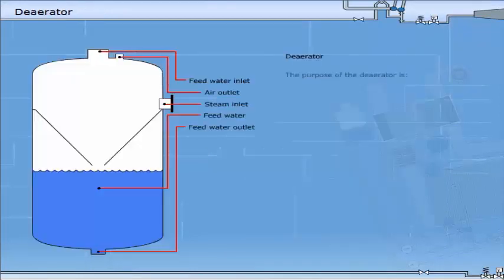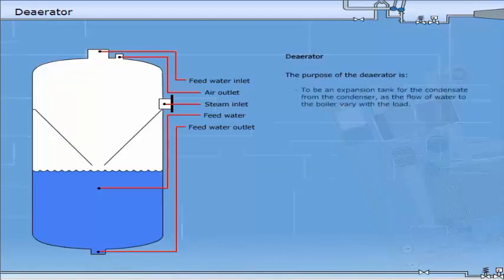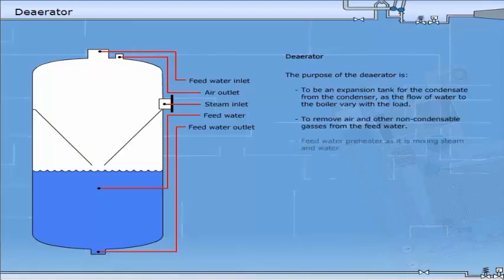The purpose of the de-aerator is to be an expansion tank for the condensate from the condenser as the flow of water to the boiler varies with the load, to remove air and other non-condensable gases from the feed water, to preheat the feed water as it is mixing steam and water, and it may be a condenser for several minor steam consumers.